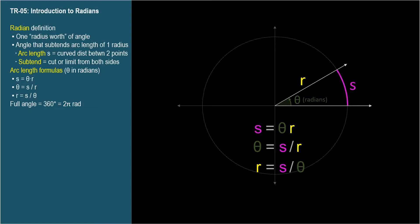I memorized the first one, s equals theta r, which tells me, in English almost, that the arc length is theta radii. These equations are valid only when the angle theta is expressed in radians, not degrees.